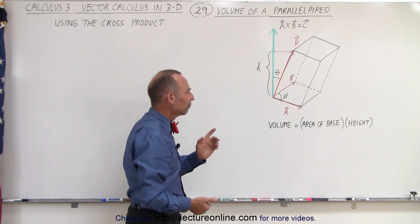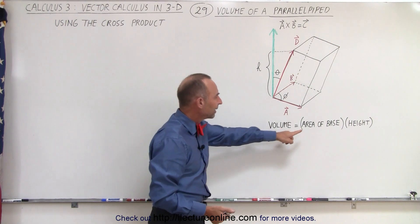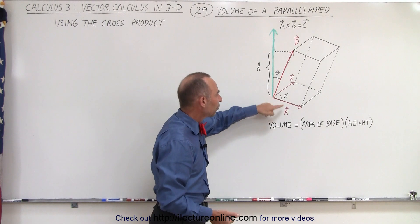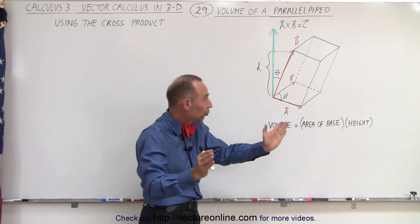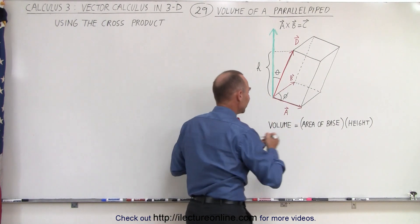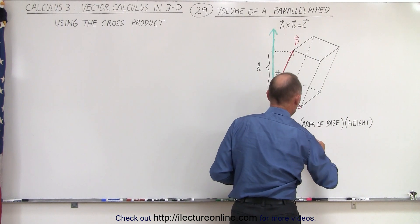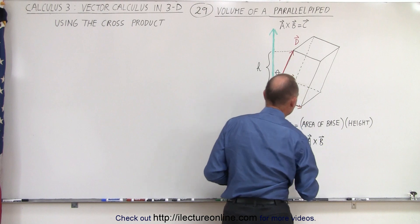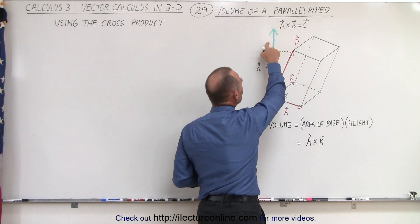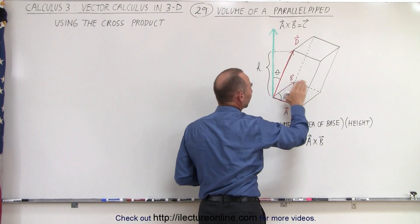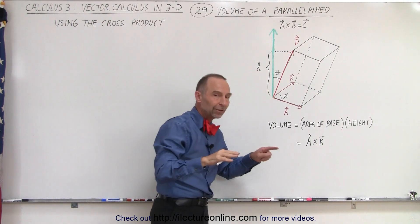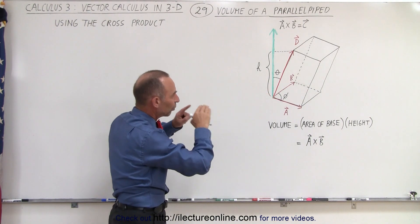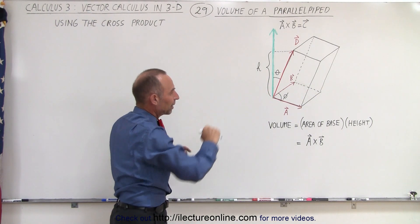So now we know from the previous videos that we can find the area of the base by simply doing the cross product of two vectors along the two sides of that base. So that means that this is equal to A cross B, and then we get a vector C which is perpendicular to that plane where A and B are in. Basically, the vector C will be perpendicular to the base of that parallelepiped.